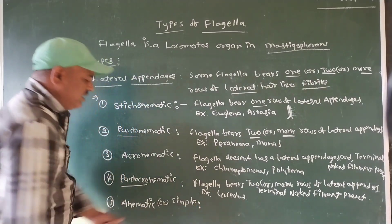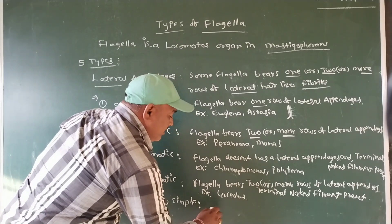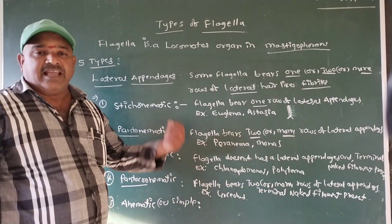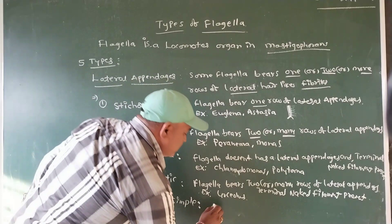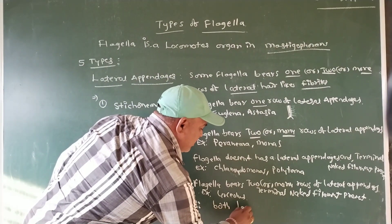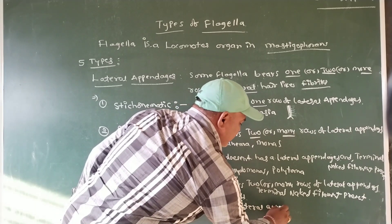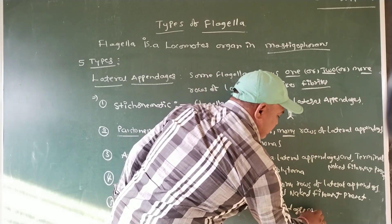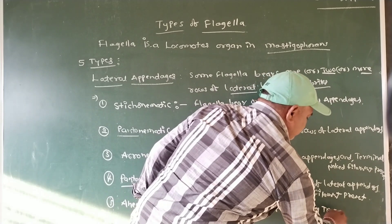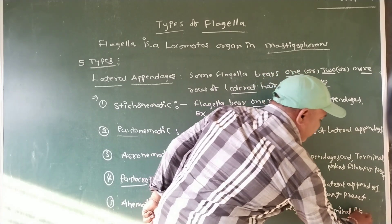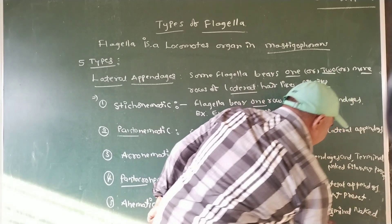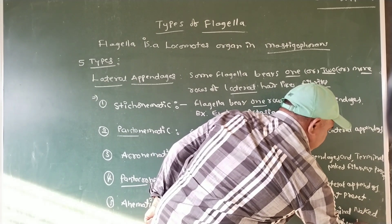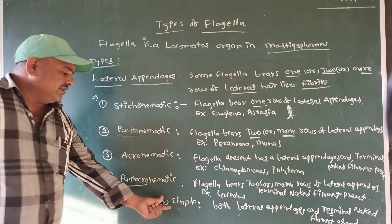Fifth, anemotic — also called simple mnemotic. The flagella does not bear any lateral appendages, and the terminal naked filament is also absent. Both lateral appendages and terminal naked filament are absent. That is called anemotic.